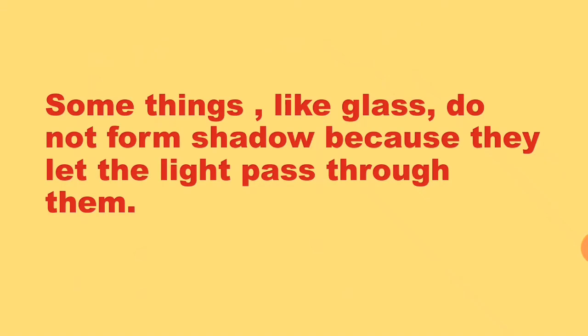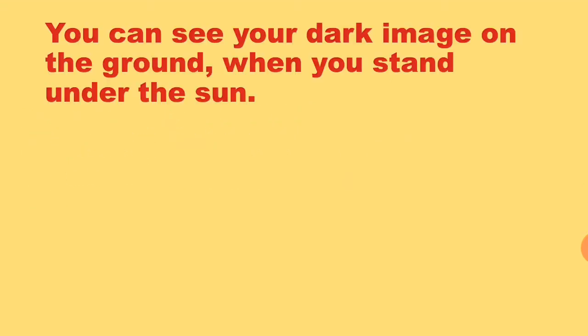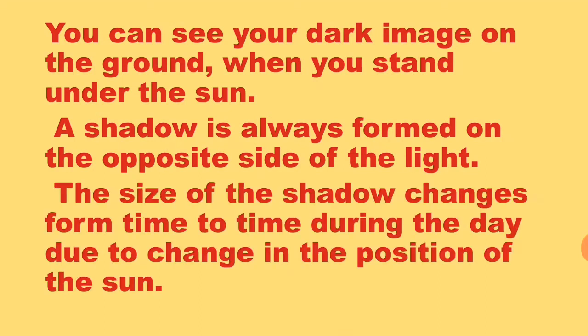Some things like glass do not form a shadow because they let the light pass through them. You can see your dark image on the ground when you stand under the sun. A shadow is always formed on the opposite side of the light. The size of the shadow changes from time to time during the day due to the change in the position of the sun.